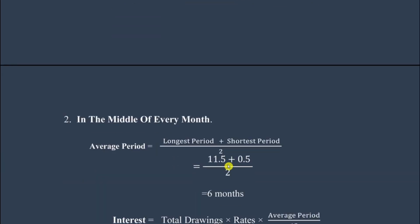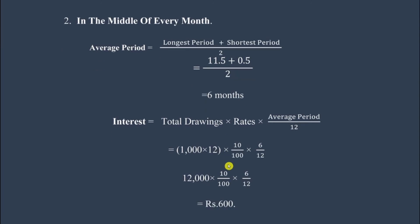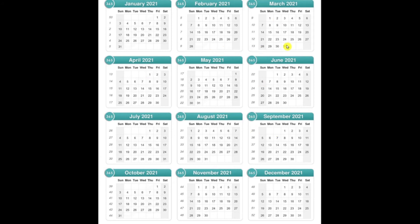Moving on to the second scenario — the middle of every month, when the amount is drawn on the 15th of every month. Using the average period formula again, we look at the calendar. Every 15th of the month starting from April 15th, an amount is drawn till March 15th.